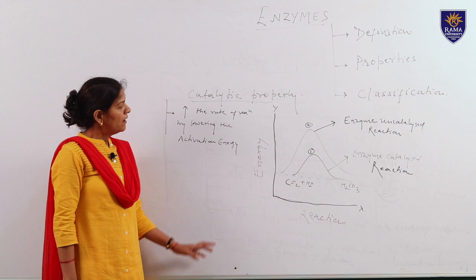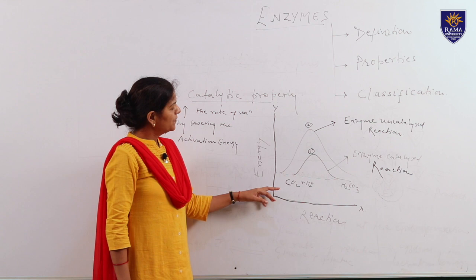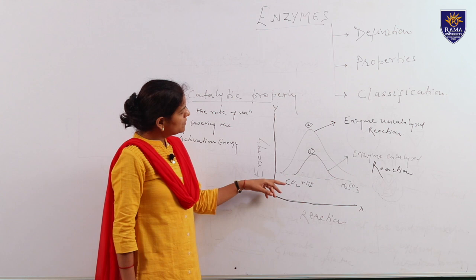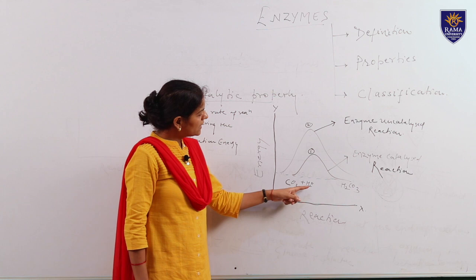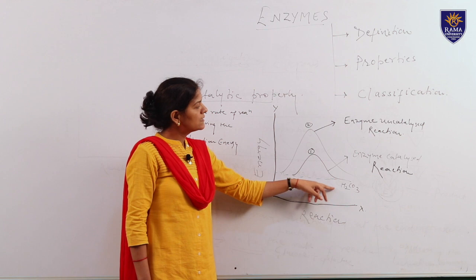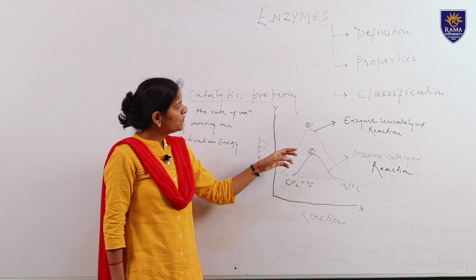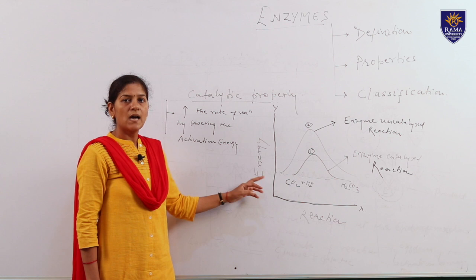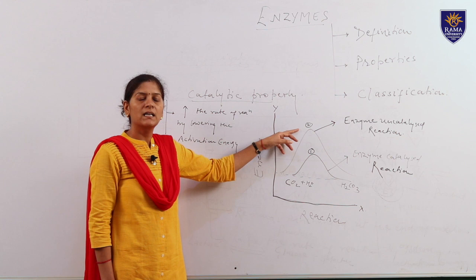We can easily understand this point by this graph, in which energy is plotted on the y-axis and the reaction is plotted on the x-axis. Two similar reactions are shown. In the first reaction, carbon dioxide reacts with water to give carbonic acid in the presence of an enzyme. In the second reaction, the same reaction takes place in the absence of an enzyme. In the first reaction, very less activation energy is required, while in the second reaction, a large amount of activation energy is required to start the reaction.